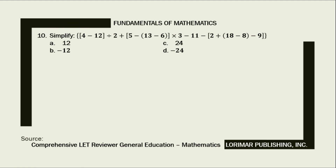Simplify: 4 minus 12 divided by 2 plus 5, minus 13 minus 6 times 3, minus 11 minus 2 plus 18 minus 8 minus 9. A. 12, B. negative 12, C. 24.